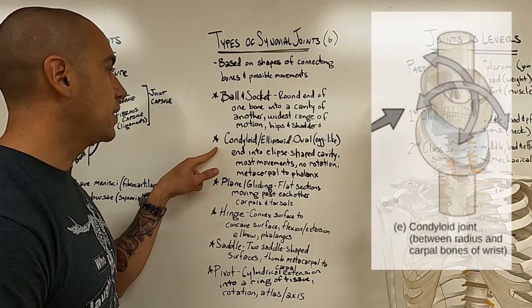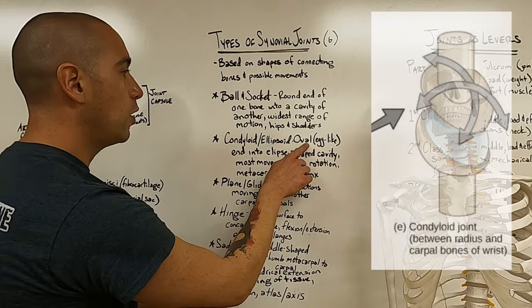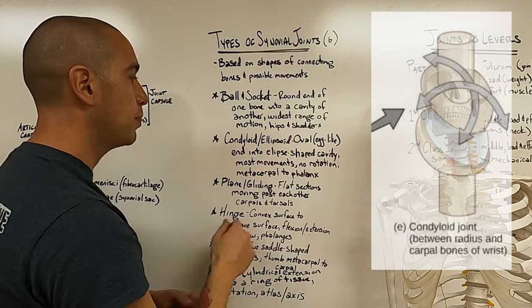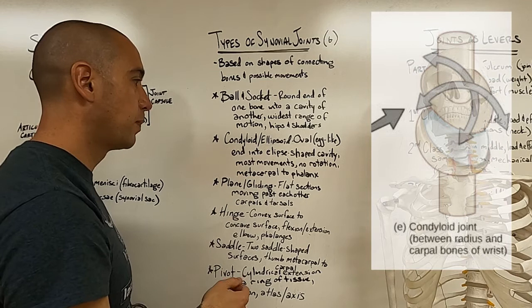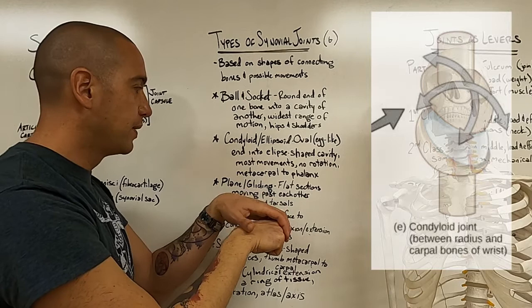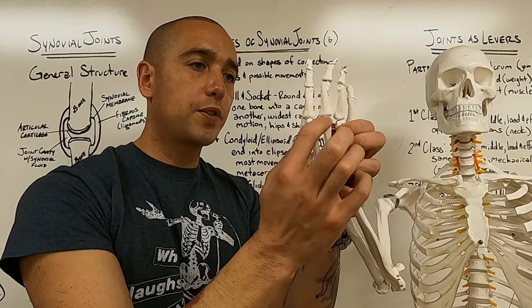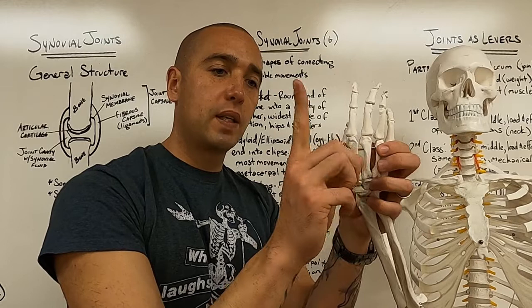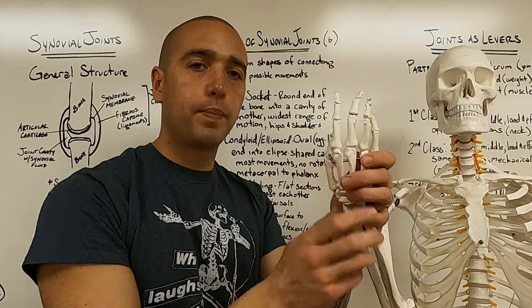Next, are condyloid or ellipsoid joints. And it's where an oval or egg-like, so not quite round like a ball and socket, but more oval shape, end of one bone goes into an ellipse-shaped cavity of another. This allows for most movements. You would have like an egg shape and kind of a shape like this. And the movements can go one way, they can go in the other plane, but no rotation is allowed. The connections between a metacarpal and the first phalanx in that finger are an example of this joint. It's why you can move your fingers in one plane, in another plane, but you can't rotate them.